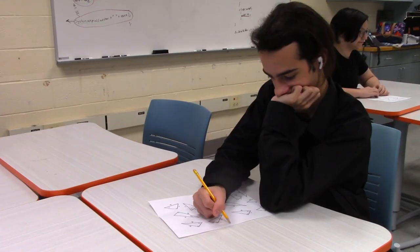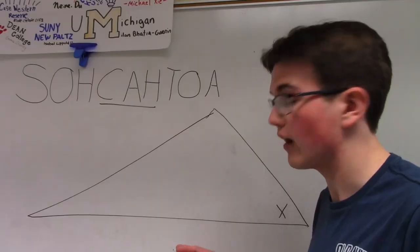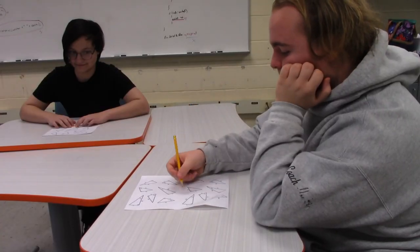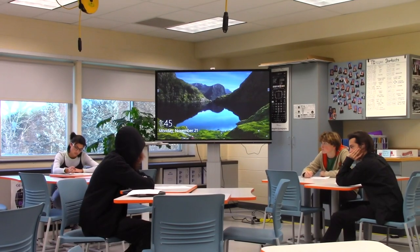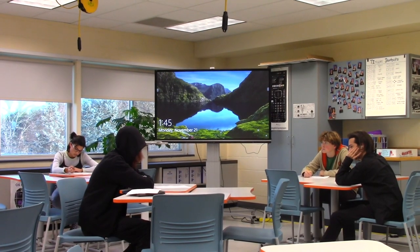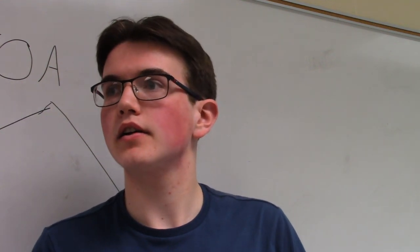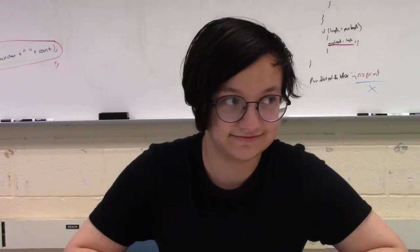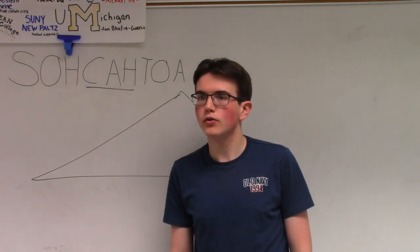So a squared plus b squared equals c squared, which is 196. So we take the radical of that and we have our c. So now we need to find the cosine of x. Anyone? And radical 18? How about Steven?